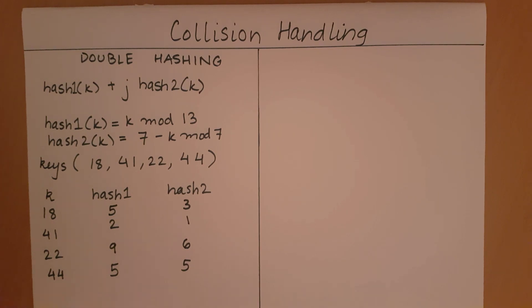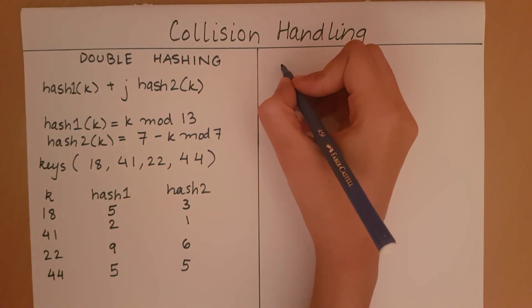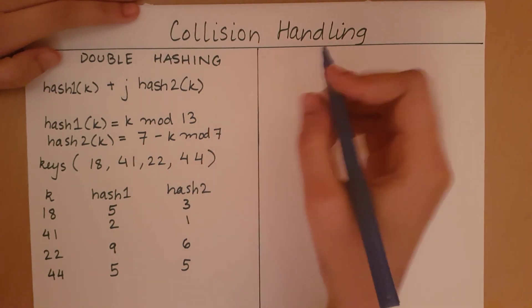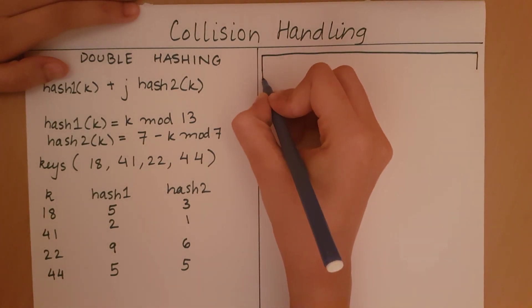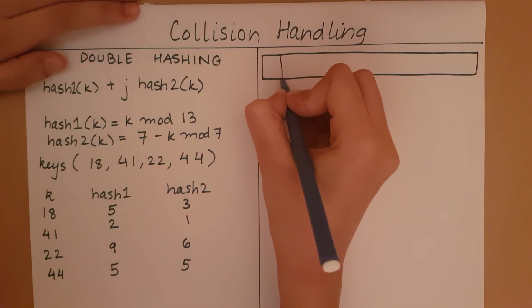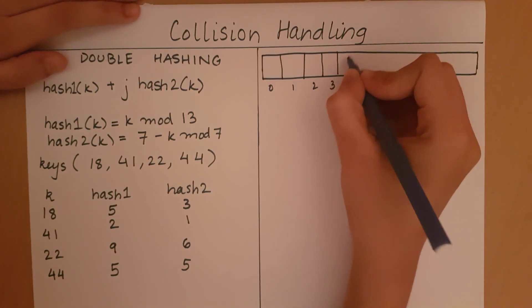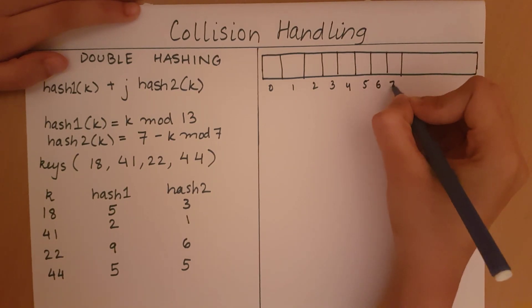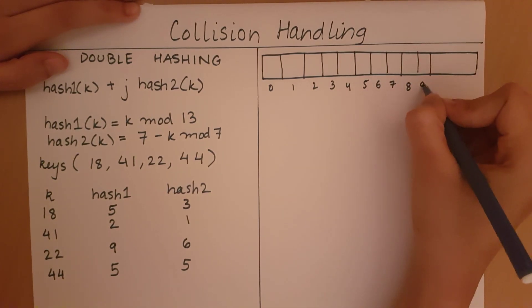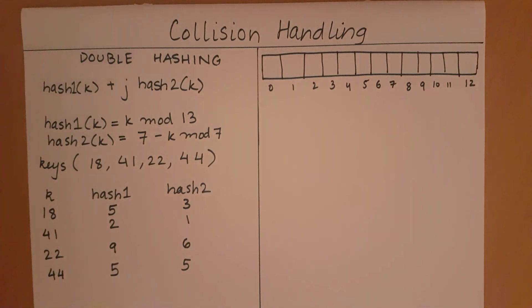Now, we'll have to go to our bucket array and start filling it up. I'm going to have a bucket array of 13 elements. This is going to be my bucket array, 0 to 12. Now, let's start adding.